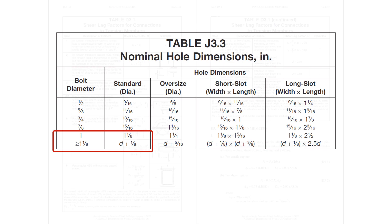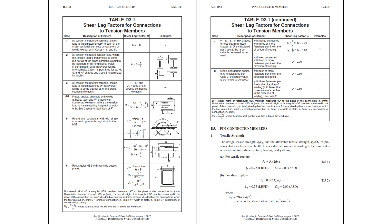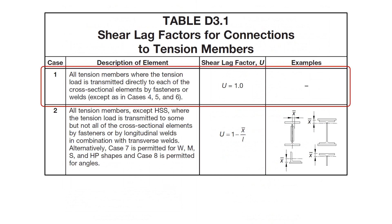Next, we turn to Table D 3.1 out of the AISC specification to determine the shear lag reduction coefficient for this bar. Looking at the different options, we see that Case 1 is the case that applies to our situation. Zooming in a bit, you can see that Case 1 is described as a situation where all tension members, where the tension load is transmitted directly to each of the cross-sectional elements by fasteners or welds. In our case, we have a bar that's made up of one element. That element is bolted directly to the gusset plate, so in this case, all of the elements of the cross-section are directly connected. Thus, in this case, U is equal to one.